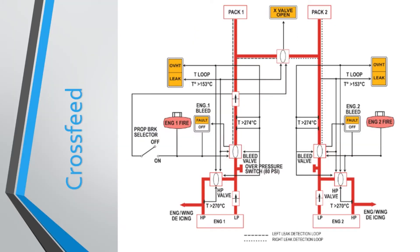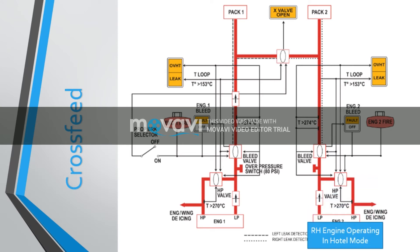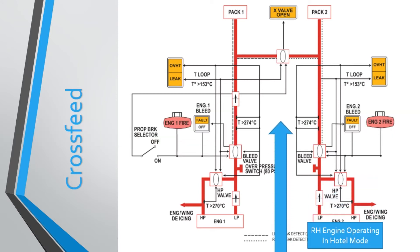The cross-feed valve is installed on the cross-feed duct and is designed to connect the left-hand and right-hand air bleed systems. On the ground, it opens only when air is supplied from the right-hand engine operating in hotel mode. In flight, the cross-feed valve is normally closed. This is a spring-loaded closed, solenoid-controlled, pneumatic shut-off valve. The valve is closed with the solenoid de-energized.